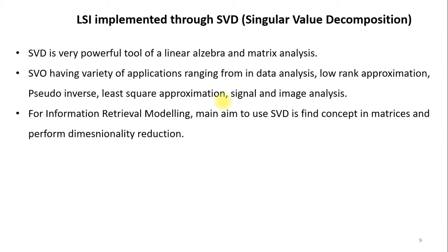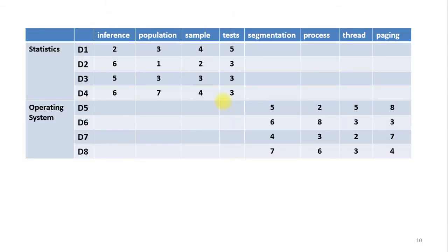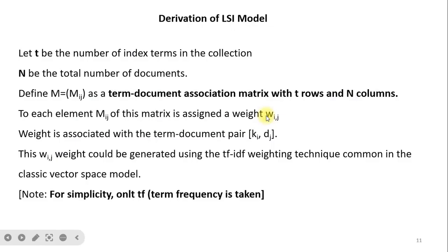We perform dimensionality reduction by converting keywords into concepts. For example, with 8 documents D1 to D4 related to statistics, keywords like inference, population, sample, and test are present with their term frequencies. Similarly for operating system documents. The derivation of the LSI model: let T be the number of index terms and M be the total number of documents. We define a term-document association matrix with T rows and N columns, assigning weight W_ij to each element — a weight associated with the term-document pair (k_i, d_j). This weight can be generated using TF-IDF, though here only term frequency is used for simplicity.